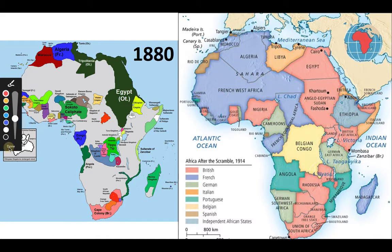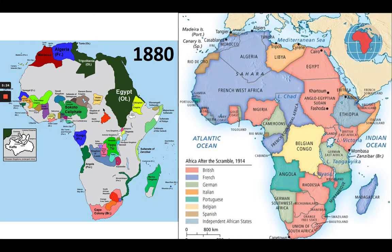In 1880, you have Egypt, which is probably the Ottoman Empire. Ethiopia is still independent. You have multiple sultanates all part of the Indian Ocean trade system. North Africa in general tends to be Muslim. You have the Sokoto Caliphate, lots of city-states, and a few colonies: Congo owned by France, Angola which is Portugal's source of slaves, Algeria owned by the French, and the Cape Colony, which was originally Dutch and then became British. But for the most part, you have lots of independent African states.